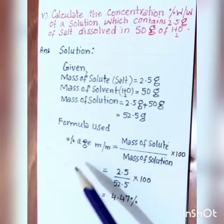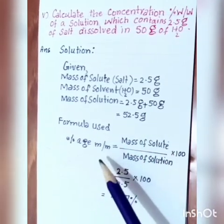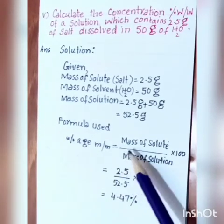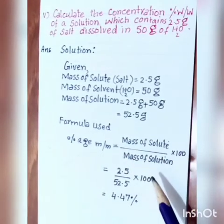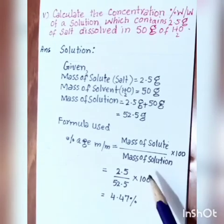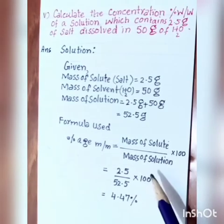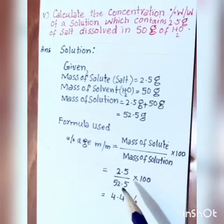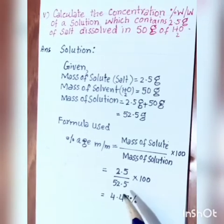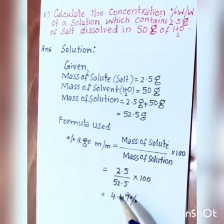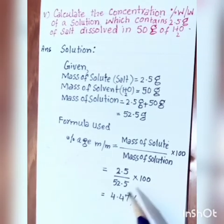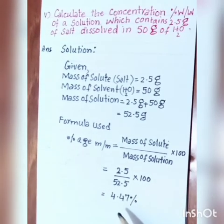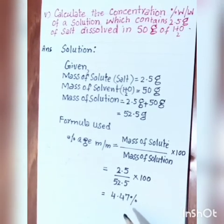Formula used: percentage mass by mass (weight by weight) = (mass of solute / mass of solution) × 100. Substituting values: 2.5 divided by 52.5, multiplied by 100. The answer is 4.47 percent.